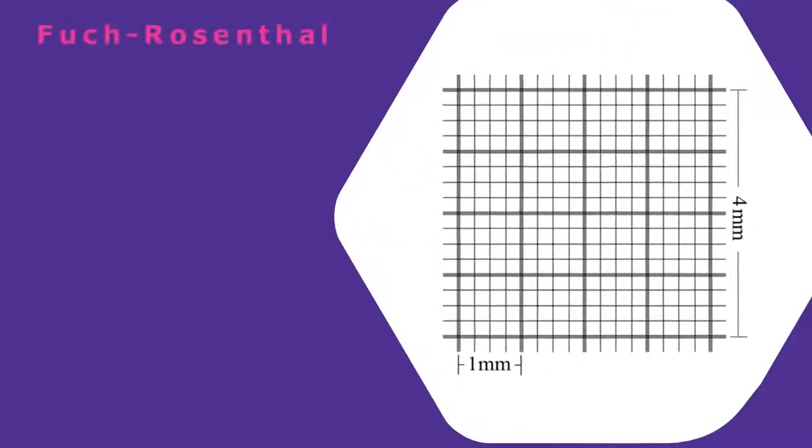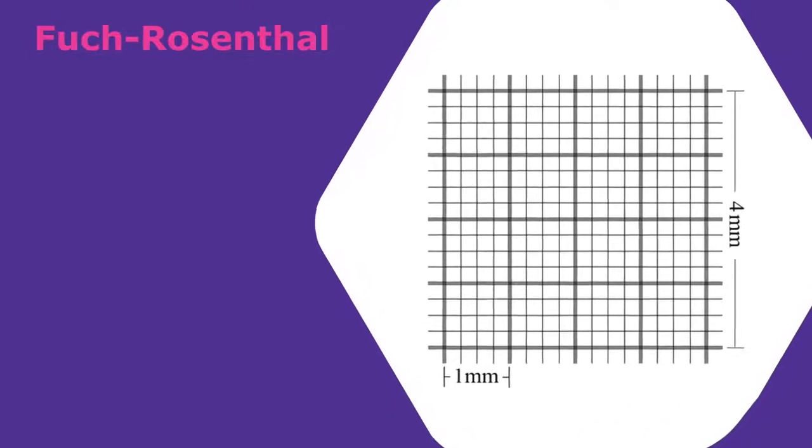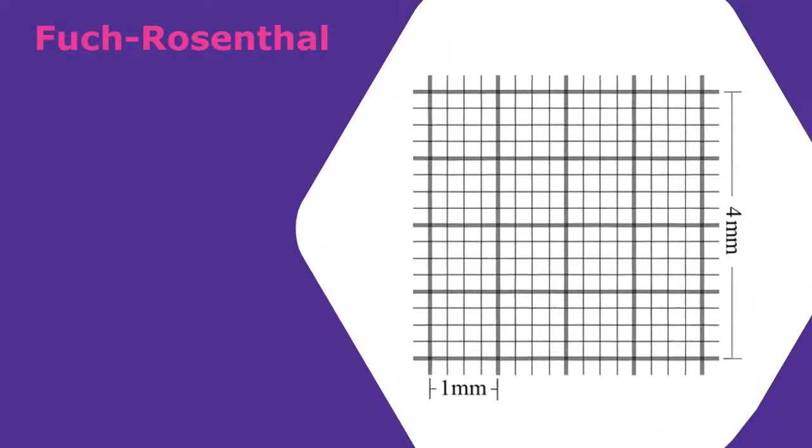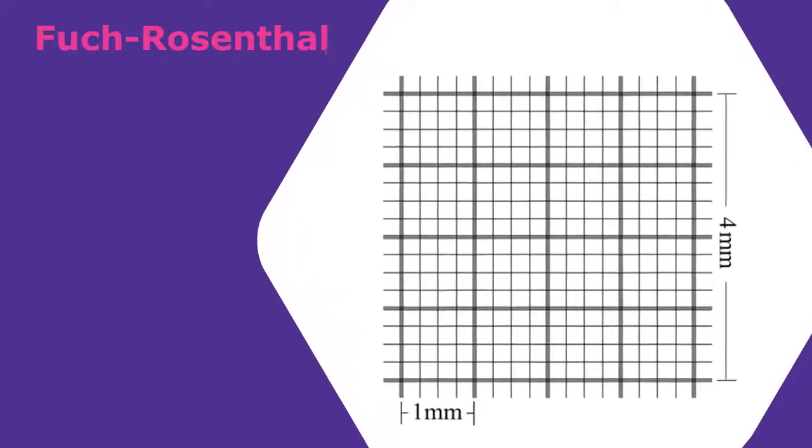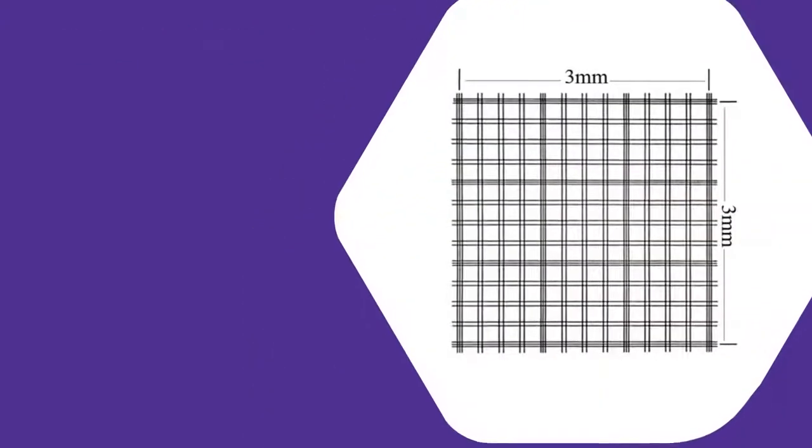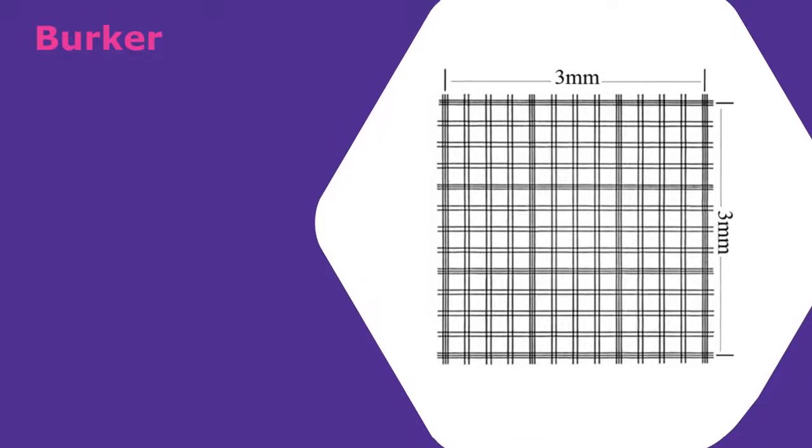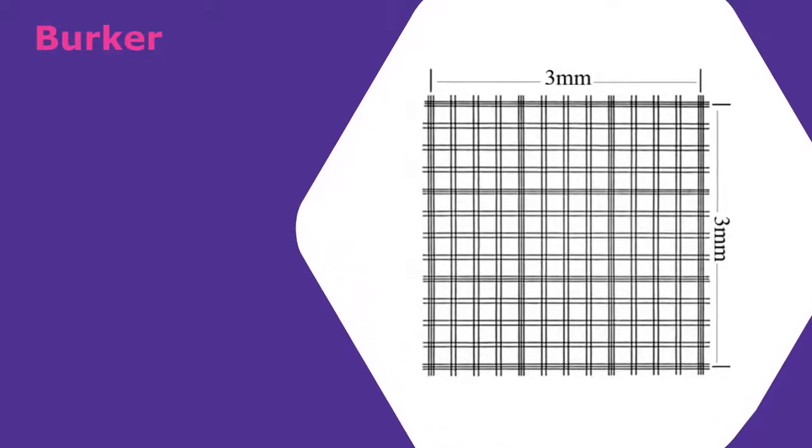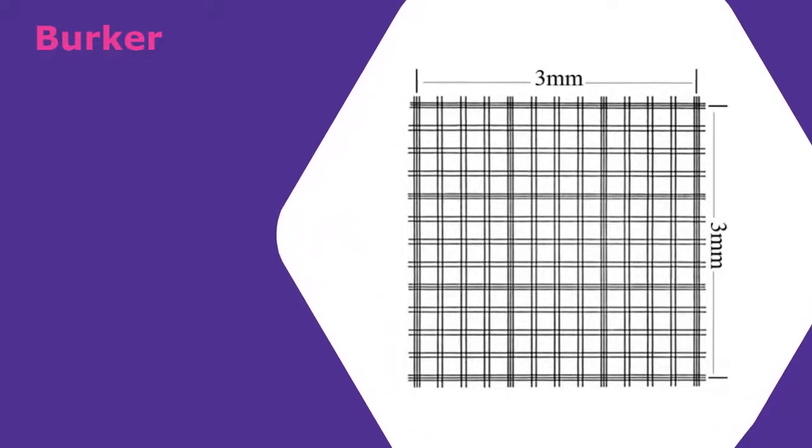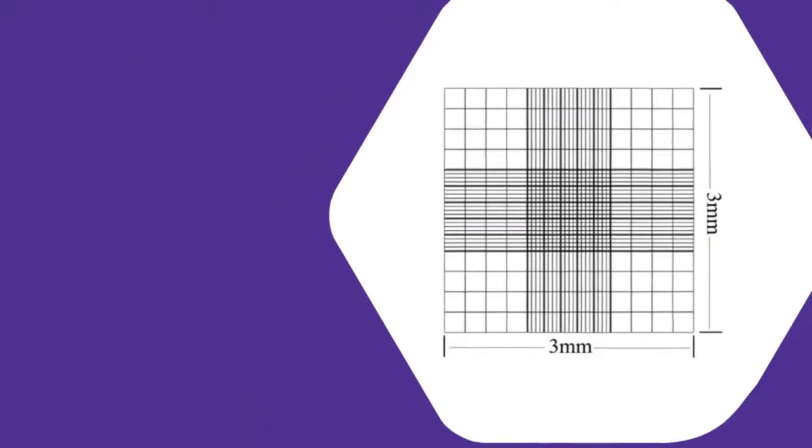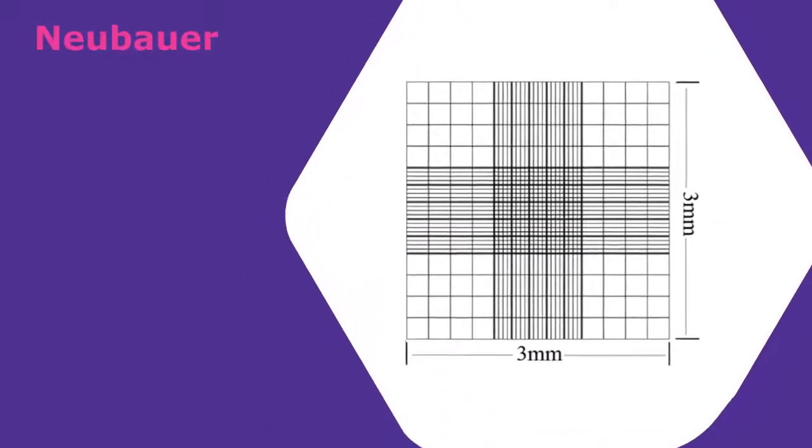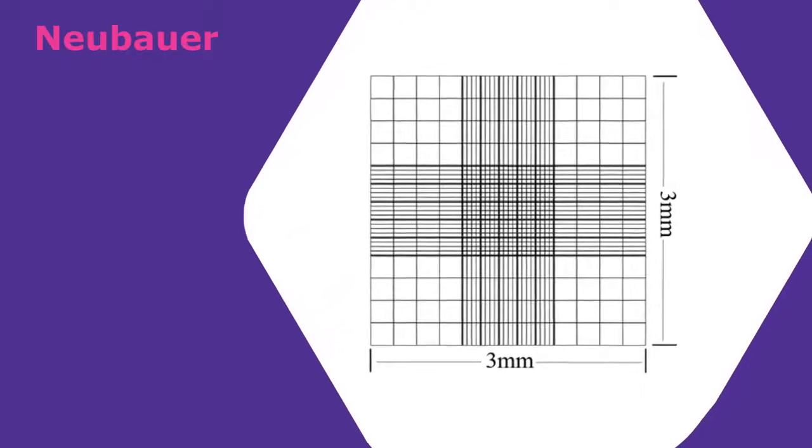Now, you may have encountered various design geometries within the counting chambers and have wondered how they all work. Despite the geometrical differences, all cell counters work under the same principle which takes cell counts at precisely defined nanoliter volumes. So, as long as we know the dimension of the grid and the volume of the chamber, we can calculate the cell concentration.